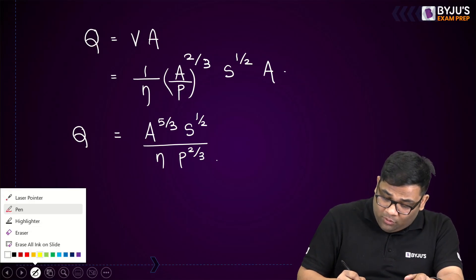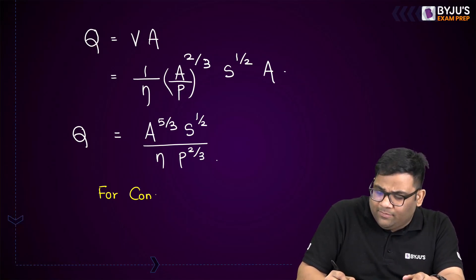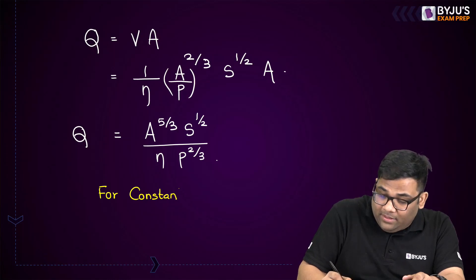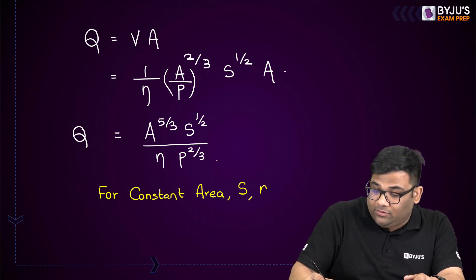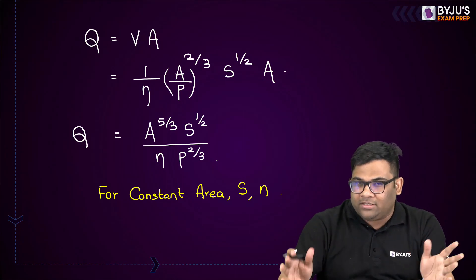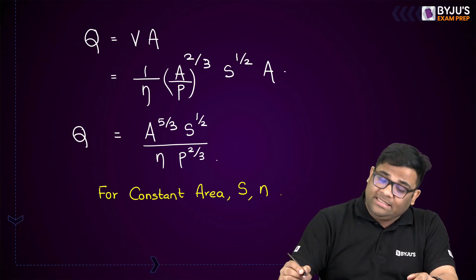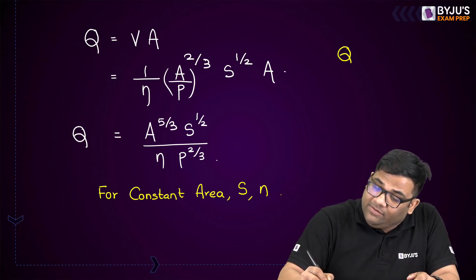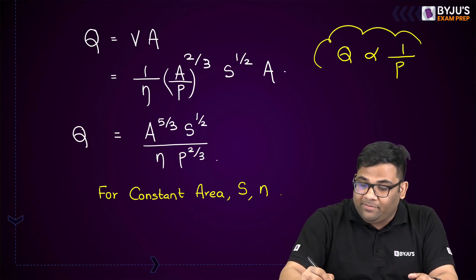What was the hydraulic radius? It was the area divided by the wetted perimeter. So I can rewrite the discharge expression as Q = A^(5/3) × S^(1/2) divided by Manning's constant × P^(2/3). For a constant area, constant slope, and constant Manning's coefficient, Q is inversely proportional to the perimeter to the power 2/3, or in general, inversely proportional to the perimeter.